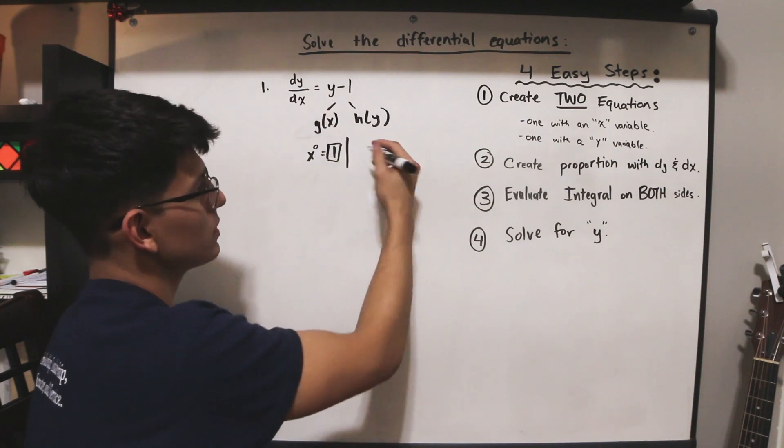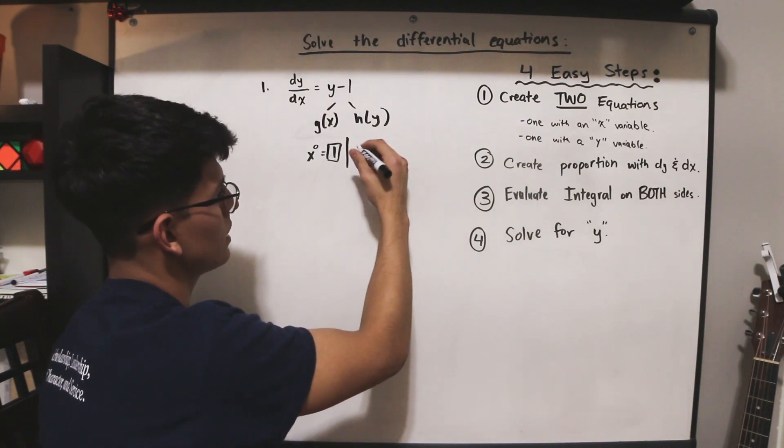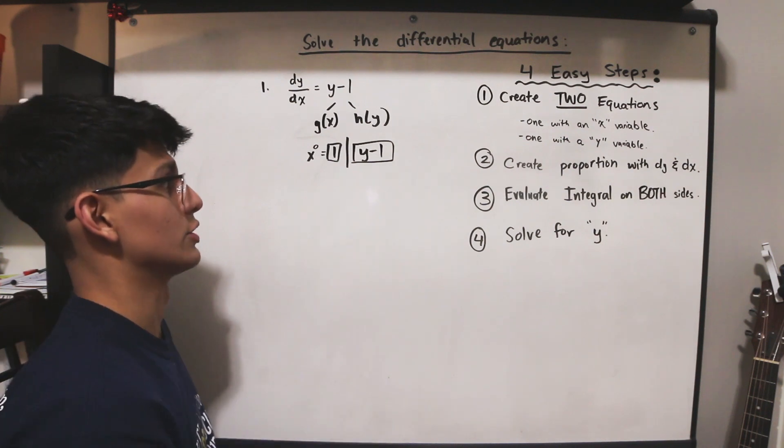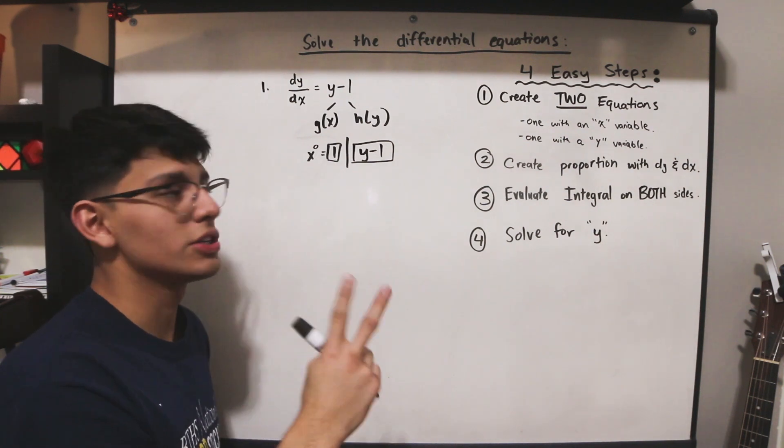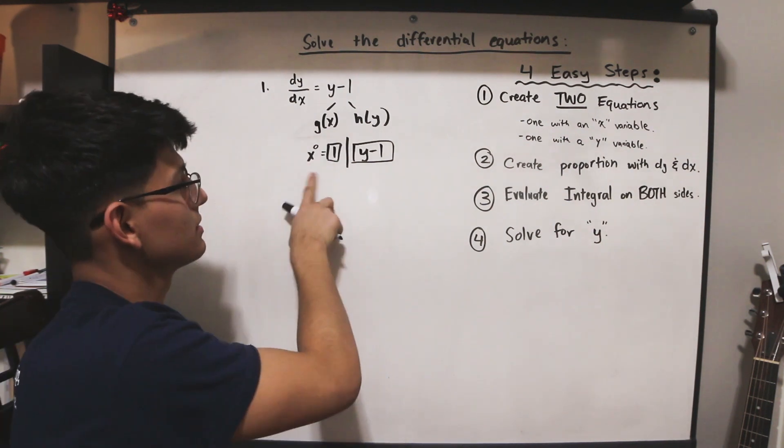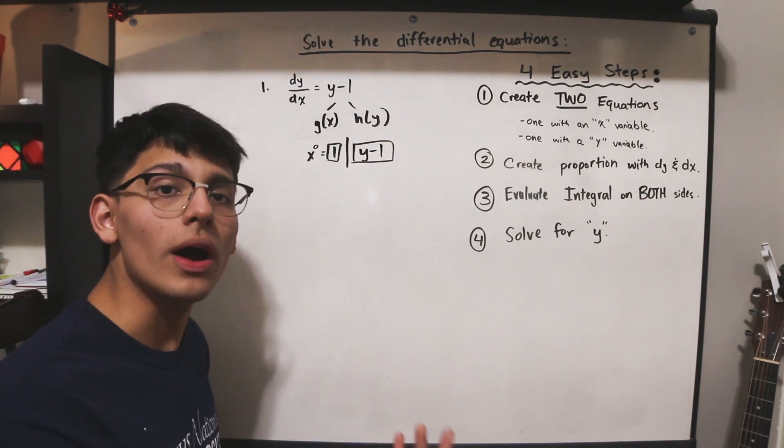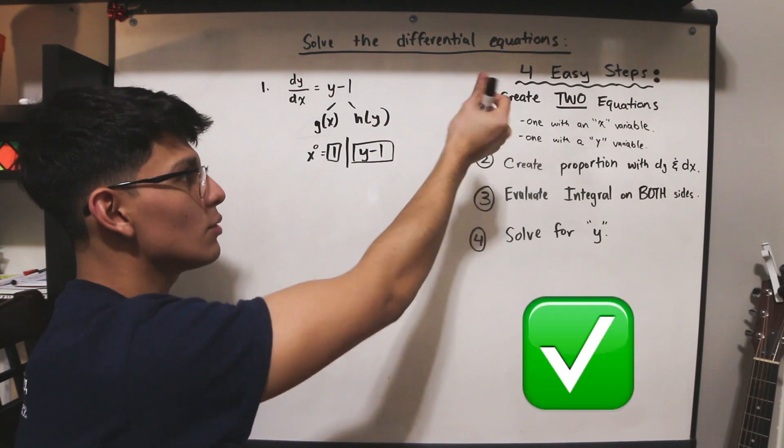Now, are there any y's? Well, yeah, the main equation is y minus 1. So that's going to be our second equation. So now we have two equations, one with an x, in this case x to the 0 which is 1, and here we have y minus 1, which is our y equation. Step one is good.